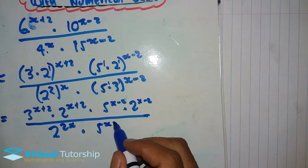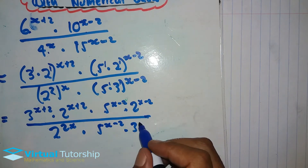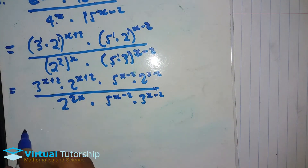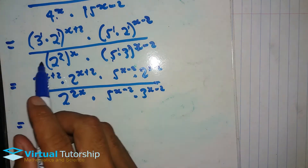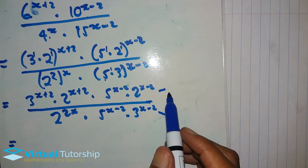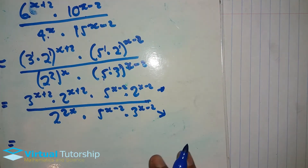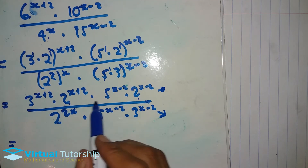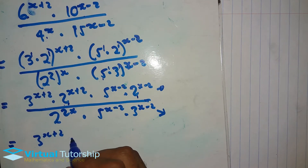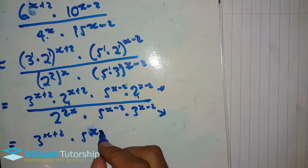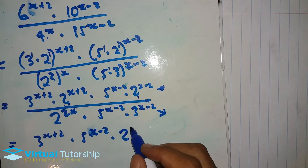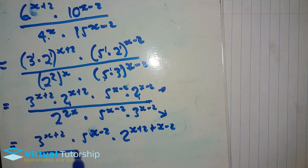The exponent x minus 2 multiplies the 1 for the base of 5 and the 1 for the base of 3. Next, write out the numerator and denominator separately. In the numerator, add the exponents of powers with the same base: 2 to the x plus 2 times 2 to the x minus 2 equals 2 to the x plus 2 plus x minus 2.